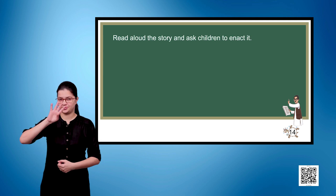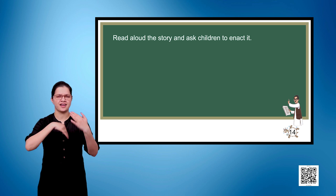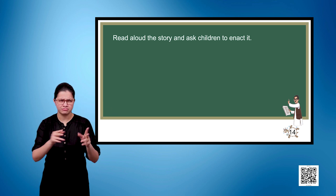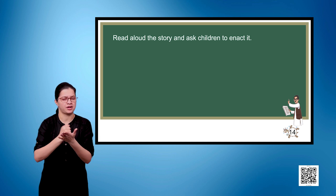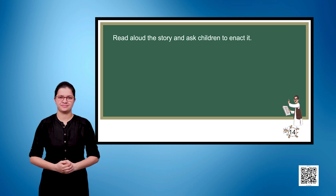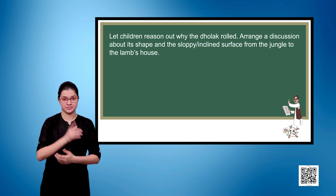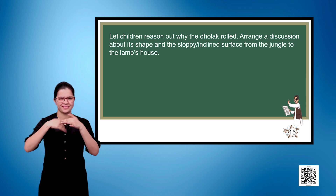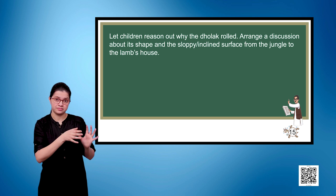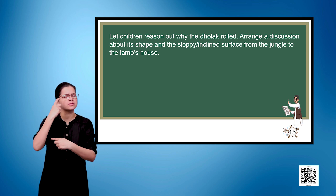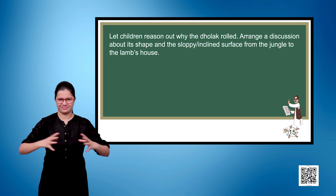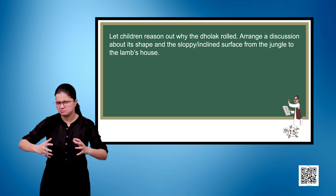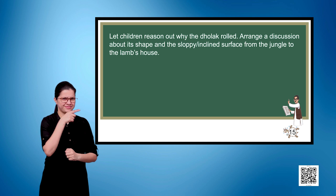Page number 14. Read aloud the story and ask children to enact it. Page number 15. Let children reason out why the dholak rolled. Let there be a discussion about its shape and the sloped or inclined surface from the jungle to the lamb's house.